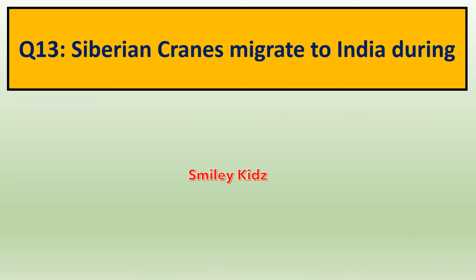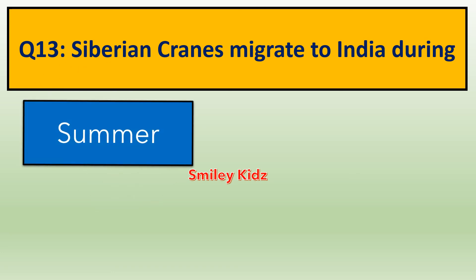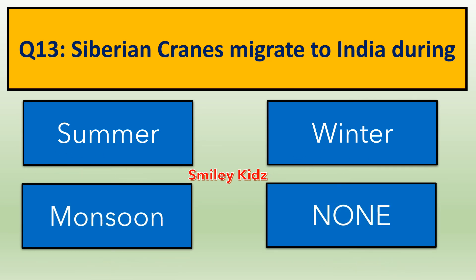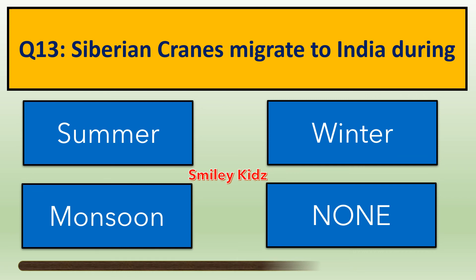Question number 13. Siberian cranes migrate to India during — options are: A. Summer, B. Winter, C. Monsoon, D. None. Your time starts now. Your time is up. The right answer is Winter. Siberian cranes migrate to India during winter.